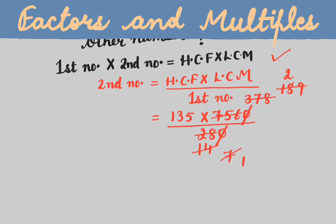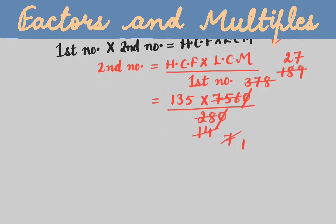And we get 135 into 27. After multiplying we get 3645 is our answer. Thank you.